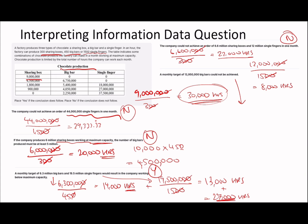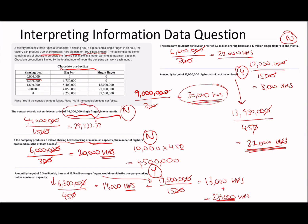Sub-question 5: a monthly target of 13,950,000 big bars could not be achieved. 13,950,000 divided by 450 = 31,000 hours, which cannot be achieved because you only have 30,000. So the answer here is yes, that statement is correct. There is also a shortcut to this question which I'll post in the comments in a couple of days - see if you can figure it out.